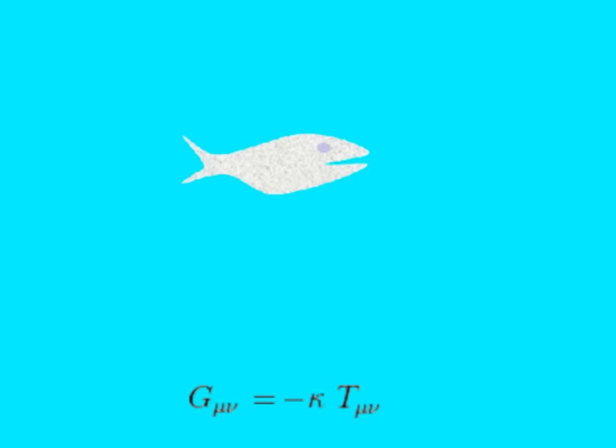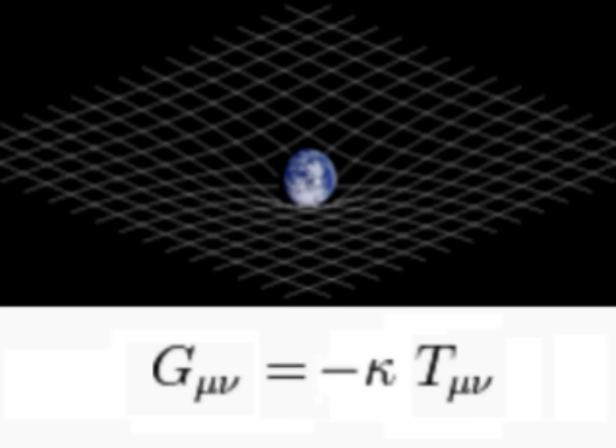Many of you are aware, general relativity proposes that gravity is geometry. Gravity is space-time curvature. So to illustrate this properly, we should include a bit of curvature.